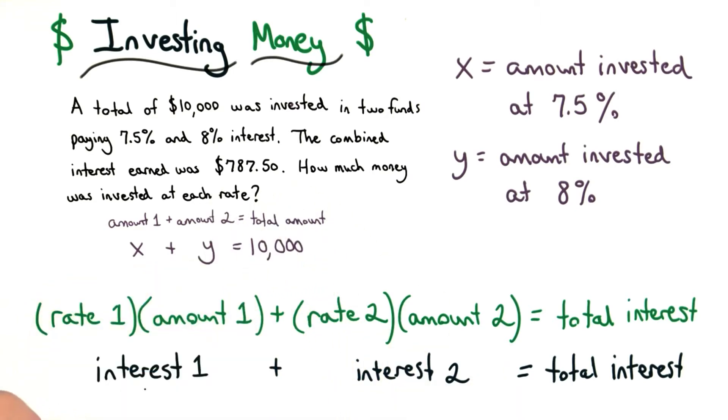But I need to find the interest first. To find interest, we take the rate and multiply it by the amount of money. For example, one of the rates is 7.5%, and the amount of money that I invested at 7.5% was, well, x.